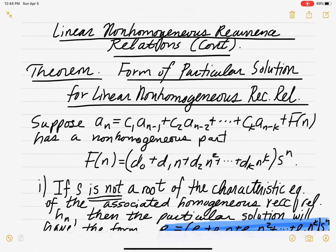We're finally ready to look at forms of particular solutions for non-homogeneous recurrence relations. This is a guide for finding the form of a particular solution. Suppose you have a non-homogeneous recurrence relation: a_n equals c1·a_{n-1} plus c2·a_{n-2}, and so forth, c_k·a_{n-k} plus some function f(n) — that's the non-homogeneous part — which is a polynomial times a geometric term.